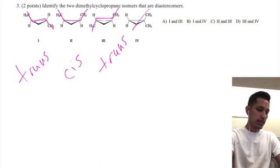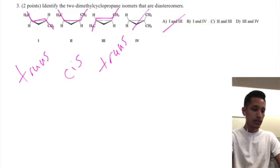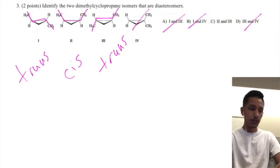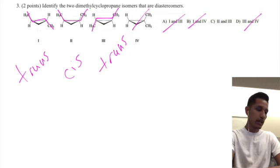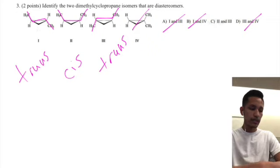And then one and four, so four was neither cis nor trans, so that's not going to be a good answer. And then same thing goes for D because that also includes four. So our only answer left is C, and so these are isomers that are not mirror images.